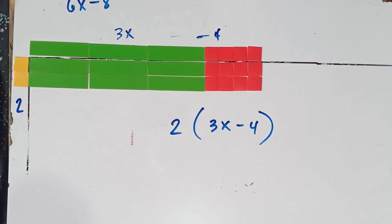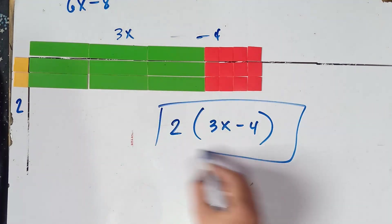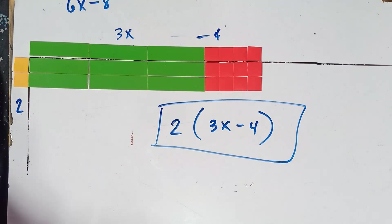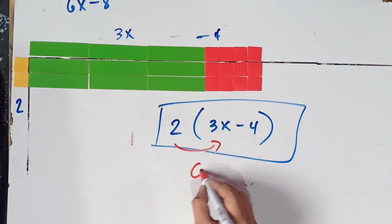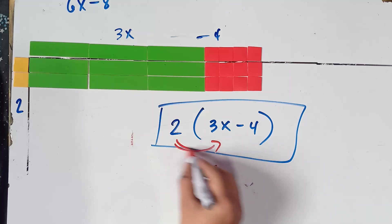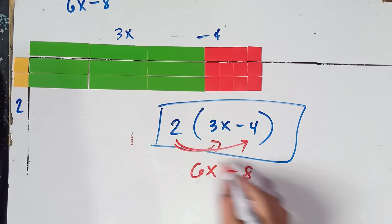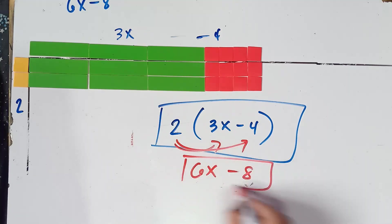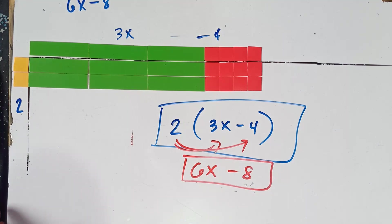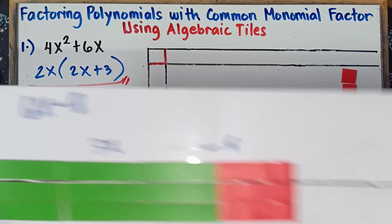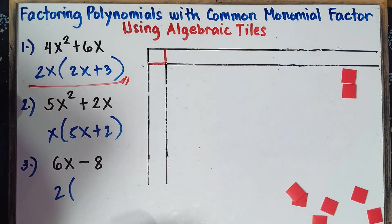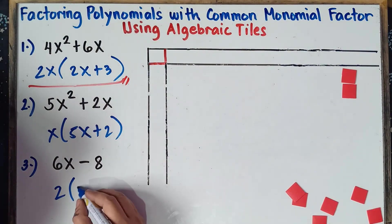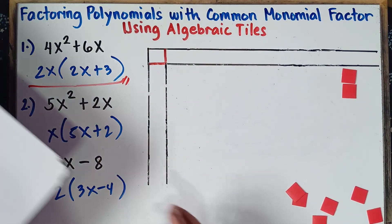Let's check our answer: 2 times 3x gives 6x, and 2 times negative 4 gives negative 8. That matches our original expression. So the answer for example number 3 is 2 times the quantity 3x minus 4.